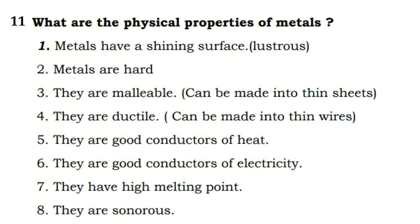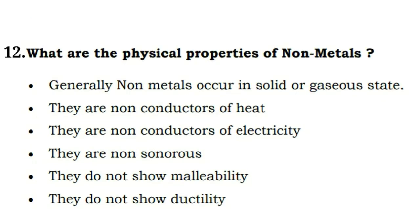Next question: what are the physical properties of metals? Metals are lustrous — they have a shining surface. Metals are hard. They are malleable — they can be made into thin sheets. They are ductile — they can be made into thin wires. They are good conductors of heat and electricity. They have high melting points and they are sonorous — they make sound.